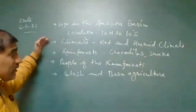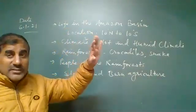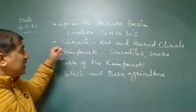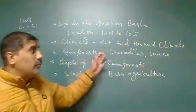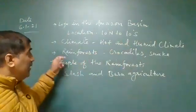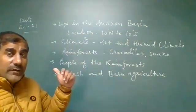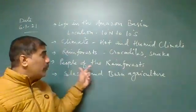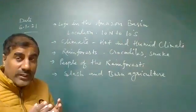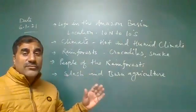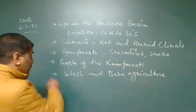Today we will discuss the location of the Amazon Basin and the Amazon River, the climatic conditions found — mostly hot and humid climate — the rainforest, wildlife, flora and fauna, the people living in the rainforest, their occupations, and finally slash and burn agriculture which we have already discussed.